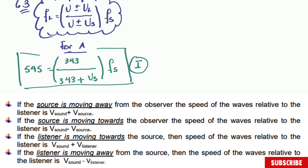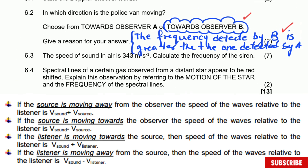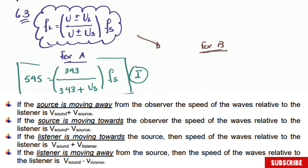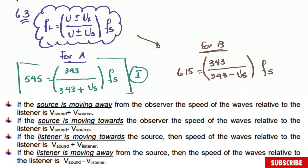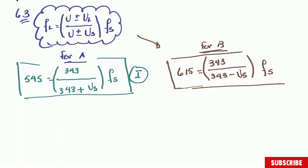Now we do exactly the same for observer B. The frequency detected by listener B is 615 Hz, equal to 343 divided by 343 minus the speed of the source (since the source is moving towards B, we use minus), multiplied by the frequency of the source. We again have two unknowns, so we stop and call this equation two.